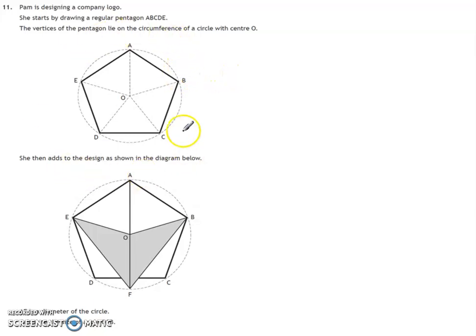So we've got this design here, it's a pentagon, there's a circle there that we can draw around it with a center of O. As the design is shown in this diagram here, AF is the diameter of the circle, calculate the size of the angle OFB. So ultimately we want this angle down here.